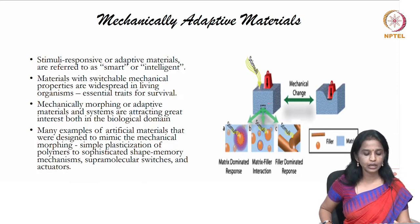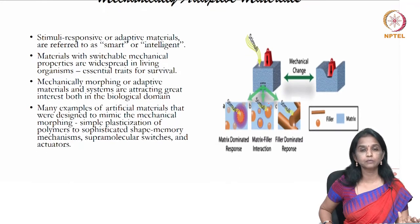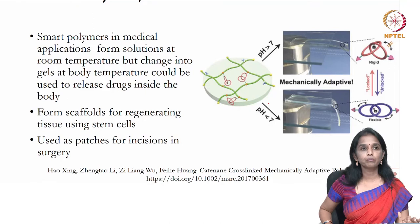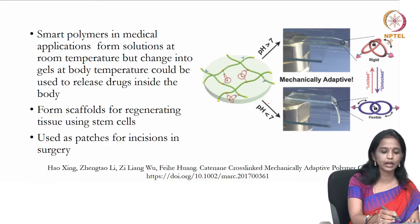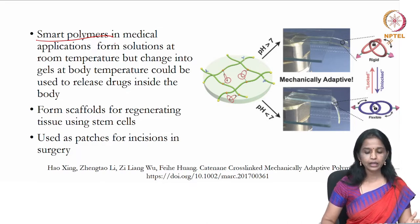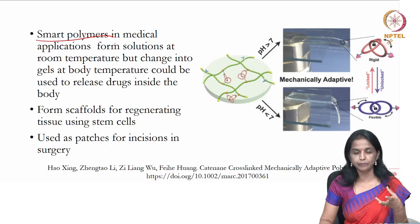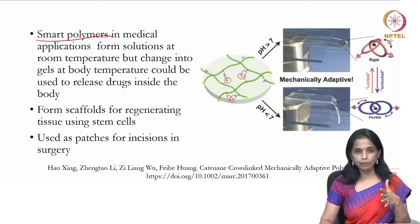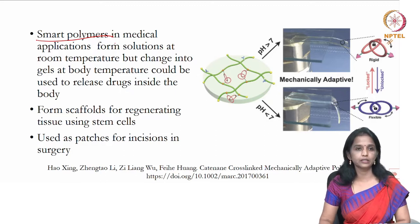Mechanically adaptive materials are especially useful in creating supramolecular switches, shape memory mechanisms, and actuators. The basis of mechanically adaptive materials is derived from smart polymers, which form the core of mechanically adaptive mechanisms. They are mainly used for forming scaffolds for regenerating tissues using stem cells, and as patches in surgery — areas where there is a constant state of biophysical flux. If the material is able to adapt and survive with any kind of stimulus, the outcomes would be as expected.